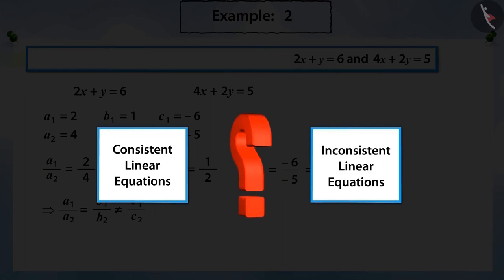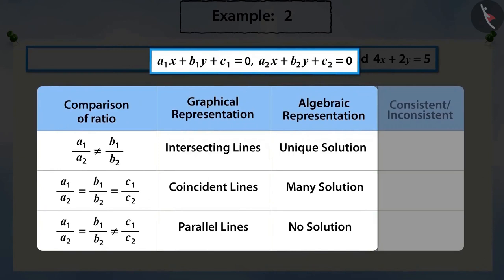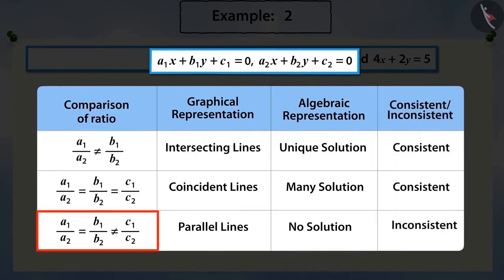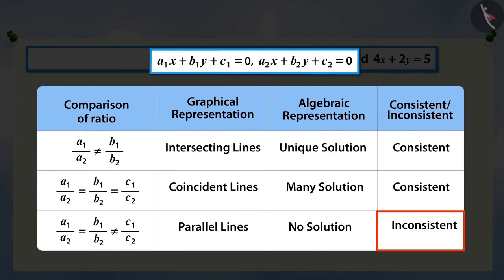Can you tell if the given pair of equations is consistent or inconsistent? Because this pair of linear equations does not have a solution, it is an inconsistent pair of linear equations.